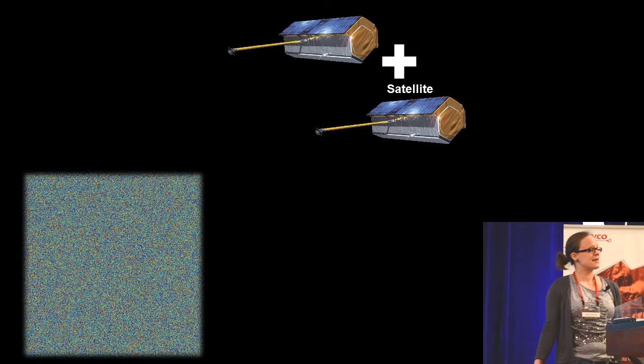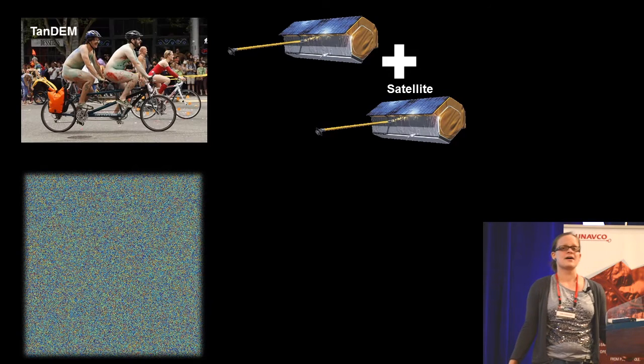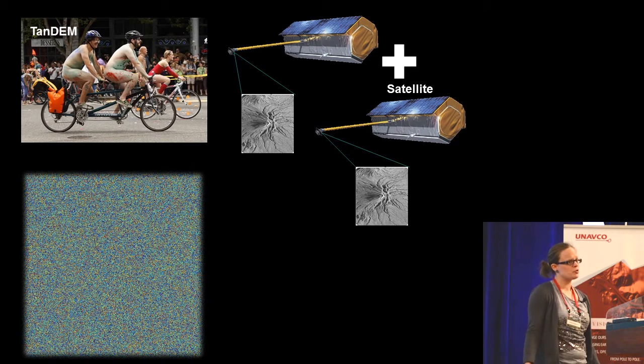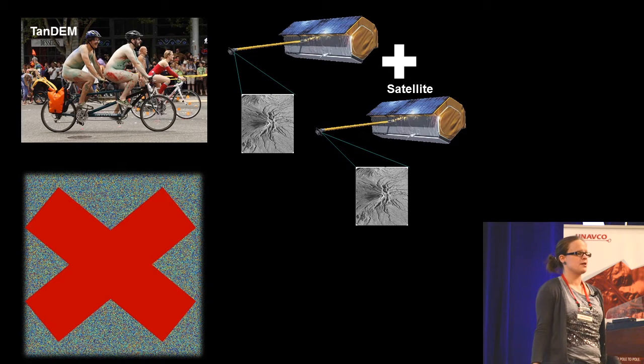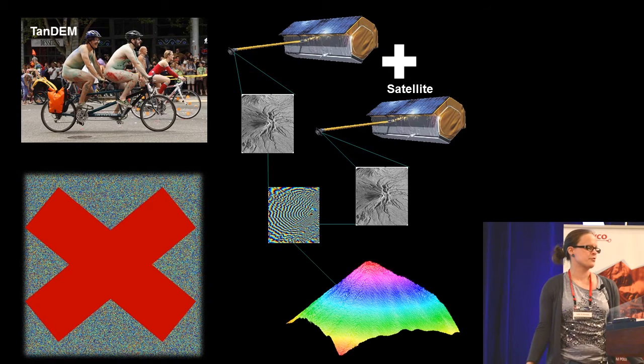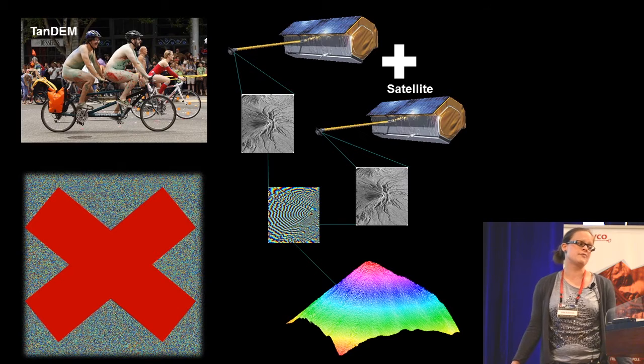I add a second satellite in a tandem formation. So I will have two satellite images at the same time, very beautiful interferograms, and a nice digital elevation model.